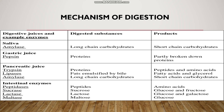The gallbladder is the storage organ of bile. The pancreas secretes pancreatic juice. Pancreatic juice contains the protein-digesting enzyme trypsin, the fat-digesting enzyme lipase, and the carbohydrate-digesting enzyme amylase. Trypsin digests proteins into peptides. Lipase digests fats into fatty acids and glycerol. Amylase digests carbohydrates into short-chain carbohydrates or maltose.